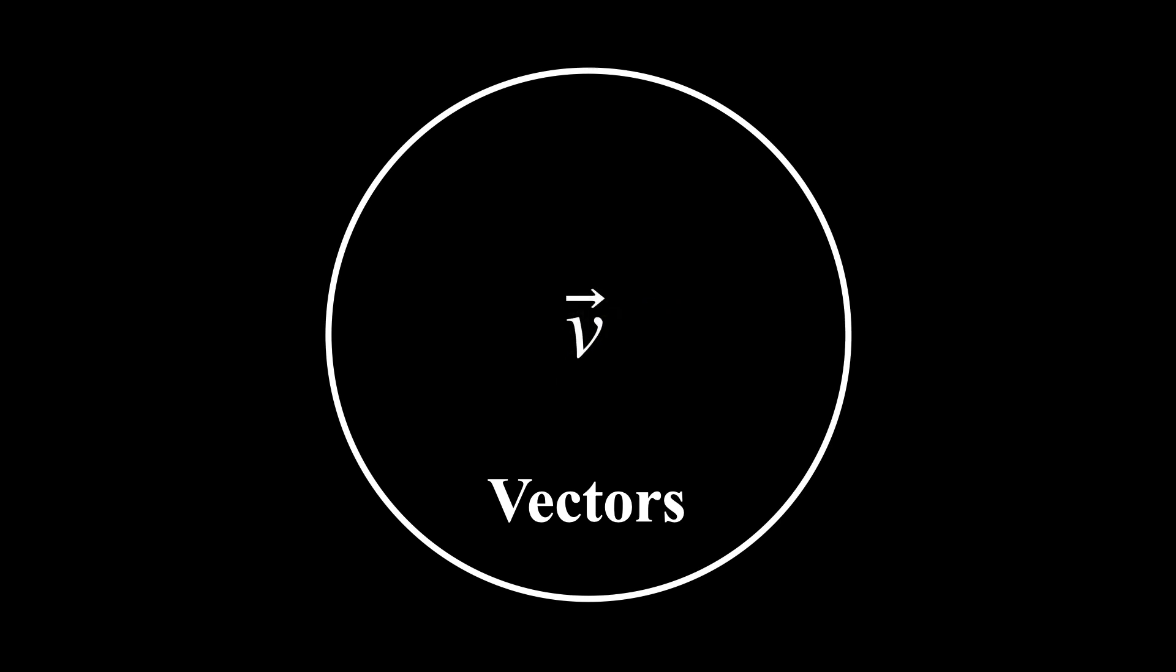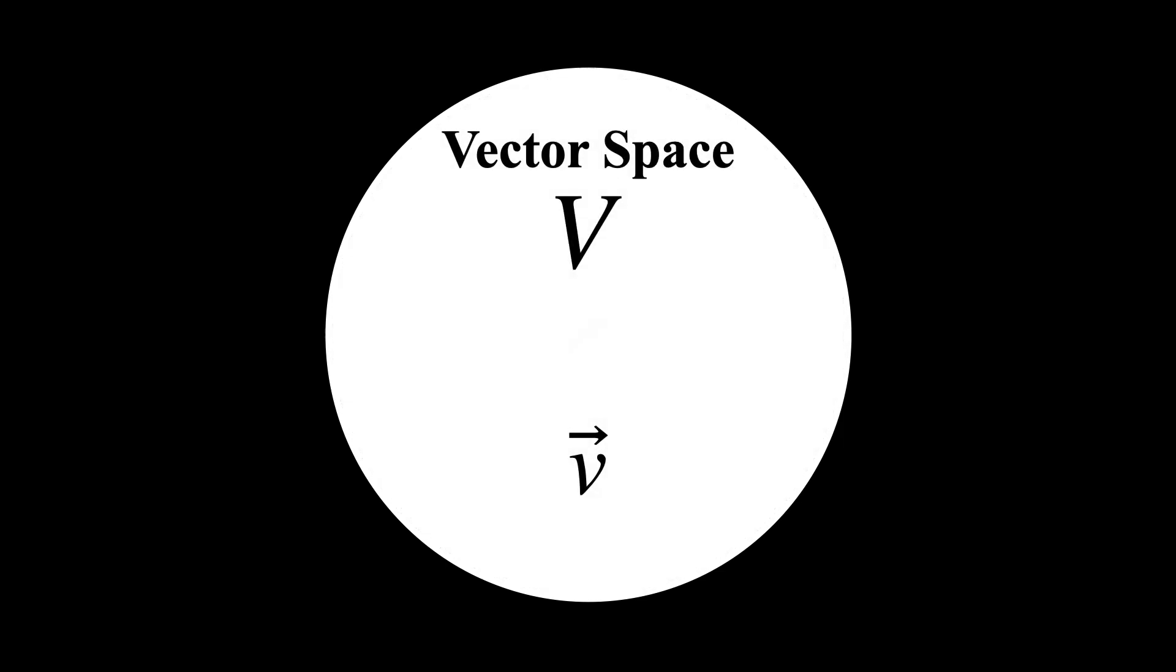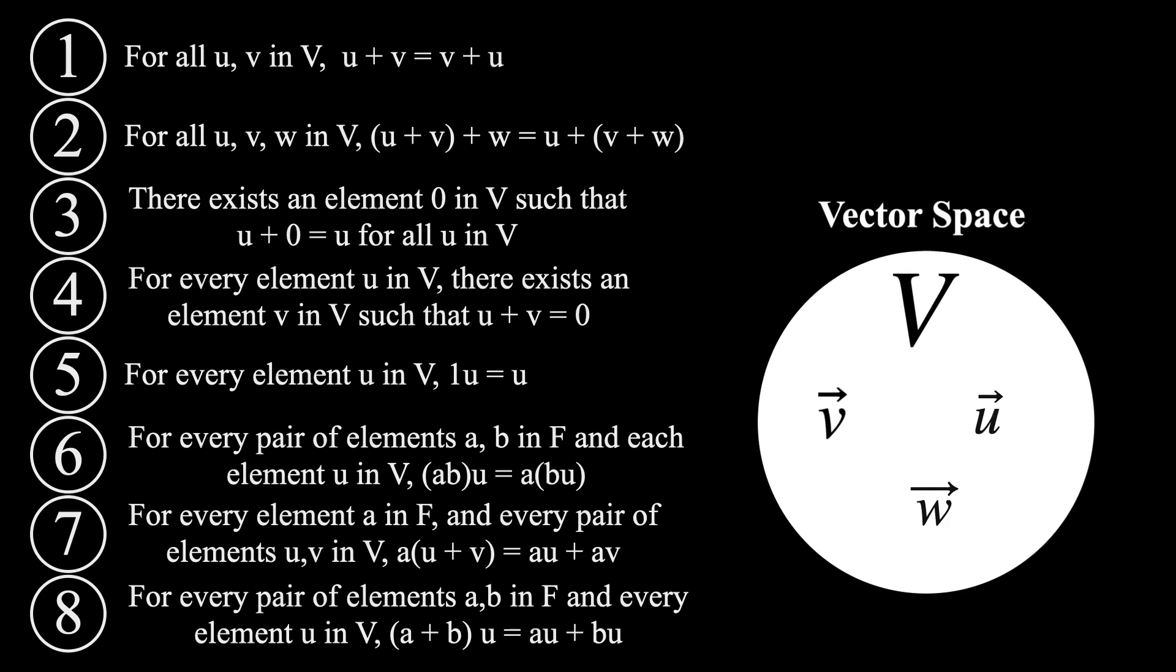According to the subject of linear algebra, a vector is really just an element that lives in a larger abstract space known as a vector space. And a vector space, which is usually denoted by a capital V, is a set that satisfies these basic axioms.